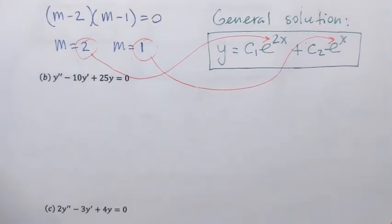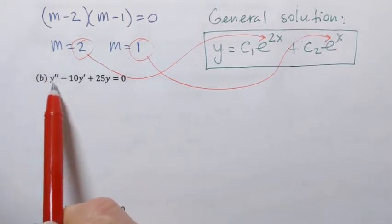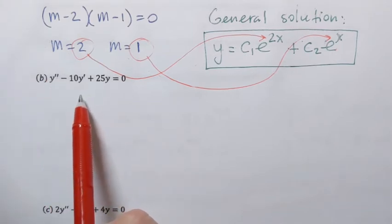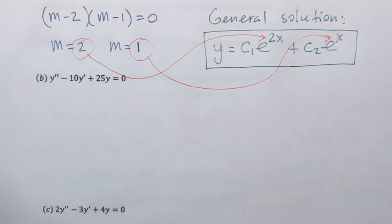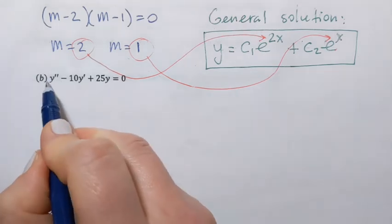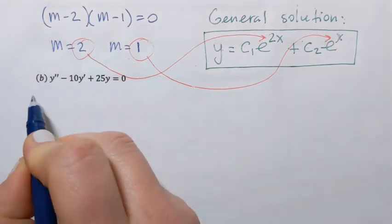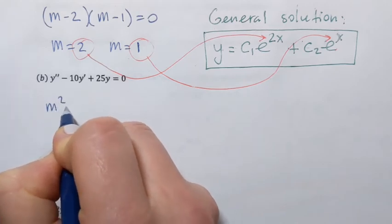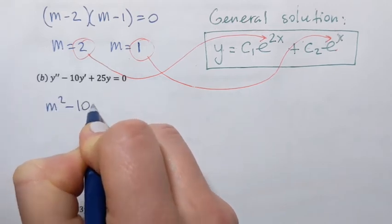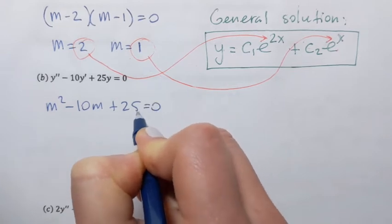Let's try the second differential equation. It's second-order, linear, homogeneous with constant coefficients. We're going to obtain the auxiliary equation by taking coefficients from the differential equation and putting them into the quadratic equation. So it's m squared minus 10m plus 25 equals 0.